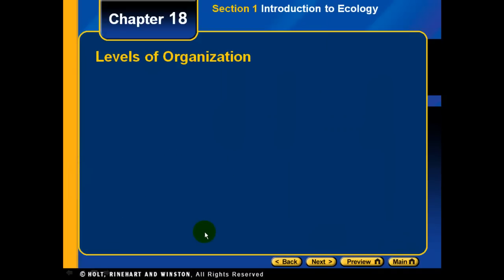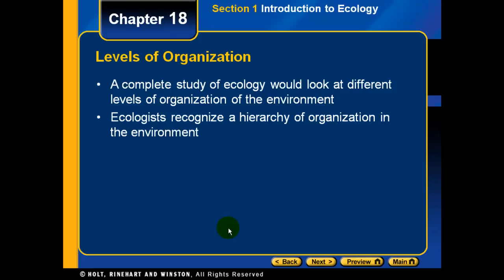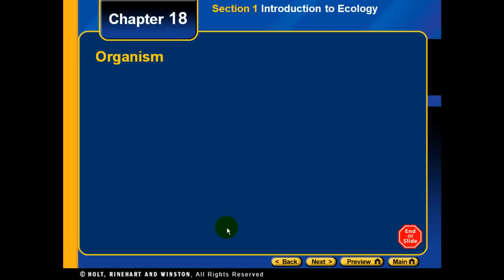Another concept in ecology is the levels of organization. A complete study of ecology looks at these different levels, recognizing a hierarchy of organization in the environment. There are five levels we need to know, though there are actually more — five specifically for ecology.